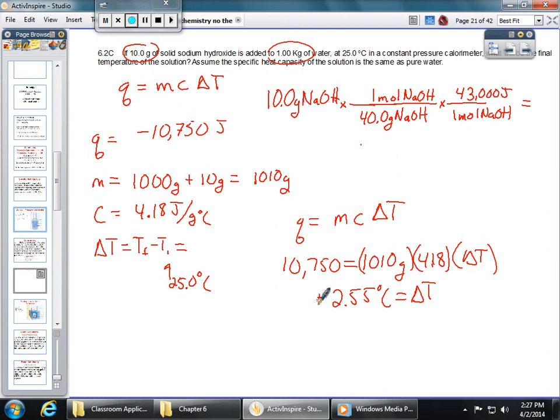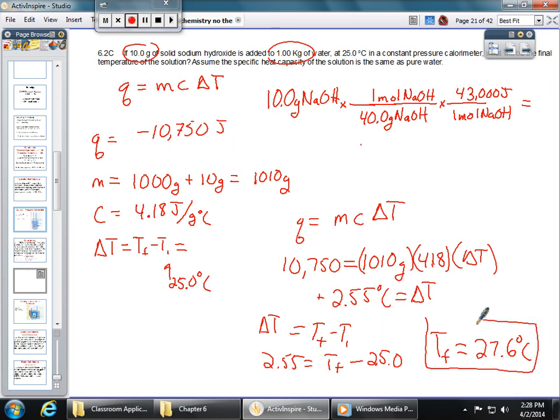this is positive because it's going to be getting warmer. So what are we going to get for our final temperature? We're going to get T final minus T initial equal to our delta T. So 2.55 is equal to Tf minus 25.0, which is going to give us a final temperature for our solution of 27.6 degrees Celsius. And that's how we're going to find our final temperature of our solution.